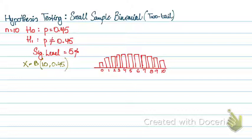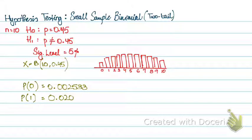So first, I'll find my critical region on the left-hand side. For this, I will calculate the probability of 0. The probability of 0 turns out to be 0.002533. Probability of 1 will be 0.0207, probability of 2 is 0.076. So it's all figured out, probability of 2 will not be a part of our critical region because it's way above 2.5%.